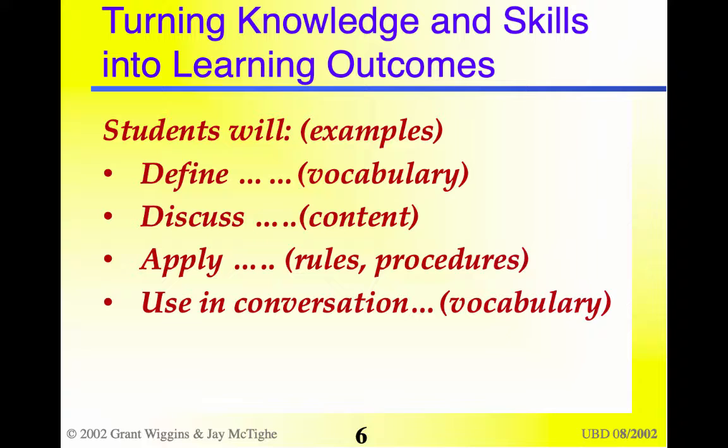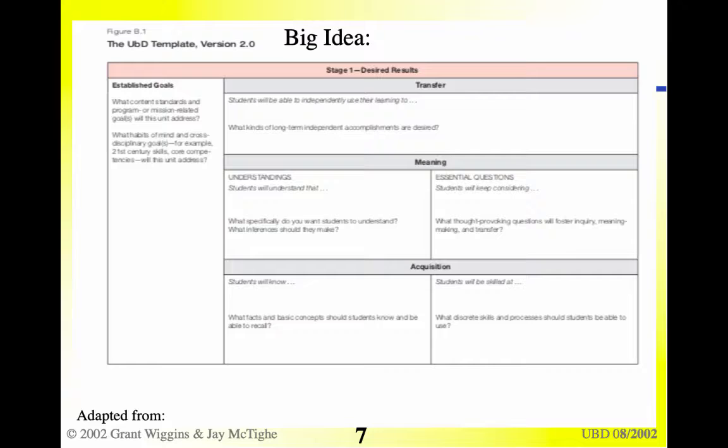Then we write those as learning objectives. For example: students will define vocabulary words. Students will discuss. Students will apply. Students will use in conversation. We write the knowledge and skills in learning outcome form so that we know specifically what our students will be trying to learn.